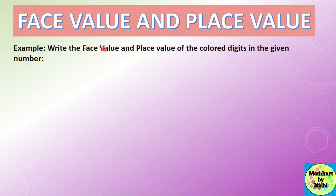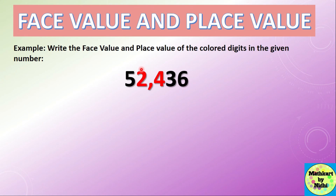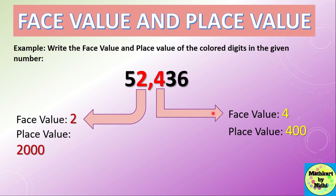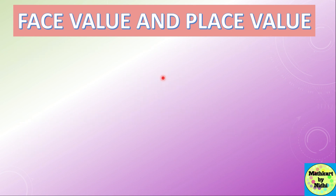Now let us look at a few more examples. Write the face value and place value of the colored digits in the number 52436. The colored digits are 2 and 4. The face value of 2 is 2, and the place value is 2000 because 2 is at the thousands place. The face value of 4 is 4, and the place value is 400 because 4 is at the hundreds place.